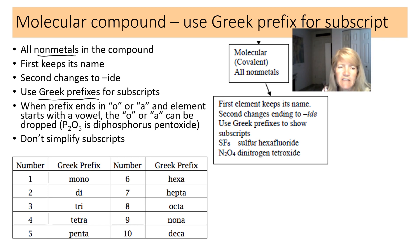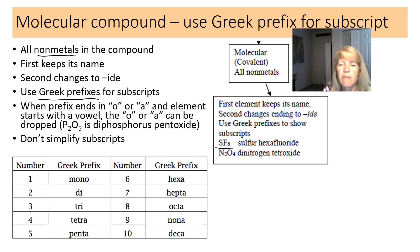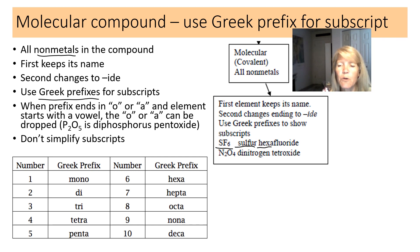Here's a list of Greek prefixes: two is di, three is tri, four is tetra, and so forth. For example, SF6 — the first element keeps its name, sulfur; there's a subscript of six so we use the prefix hexa; and fluorine changes to fluoride.